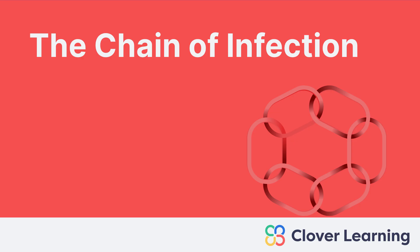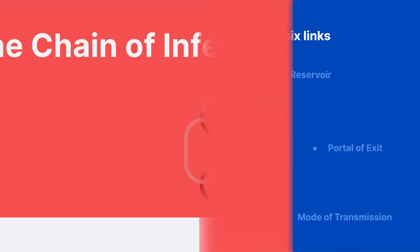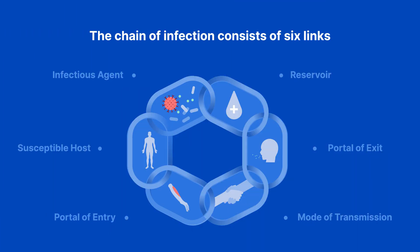Hey everybody, welcome to this lesson on the chain of infection, a fundamental concept in healthcare. We will discuss each of the links in the chain of infection, how each link contributes to infection, how diseases spread through populations, and how the chain can be broken. The chain of infection consists of six links, each playing a vital role in the spread of infections.